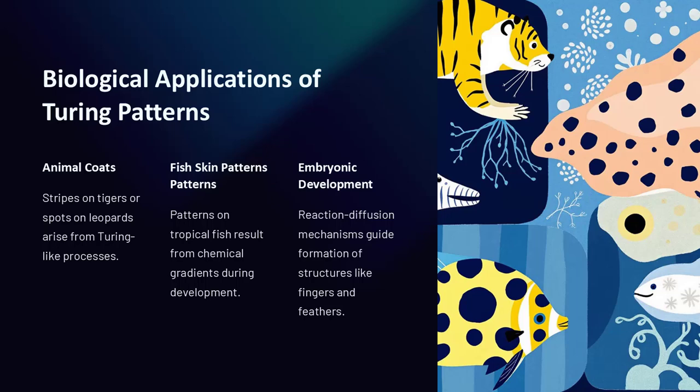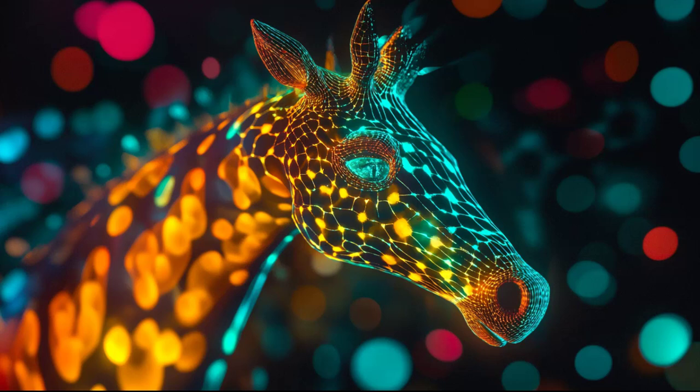Patterns on tropical fish such as zebrafish result from chemical gradients formed during development. In early embryonic development, reaction diffusion mechanisms guide the formation of structures like fingers, feathers, and even organ precursors. The feather arrangement in bird embryos is thought to be influenced by Turing patterns, where chemical signals dictate the spacing and alignment of feather buds.